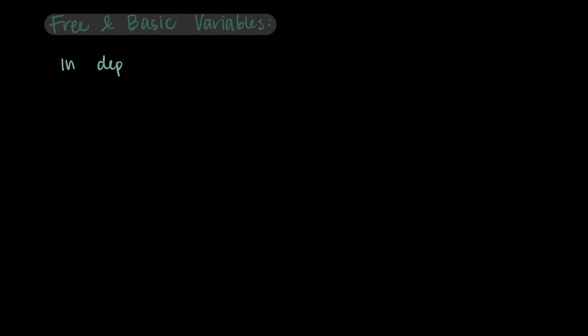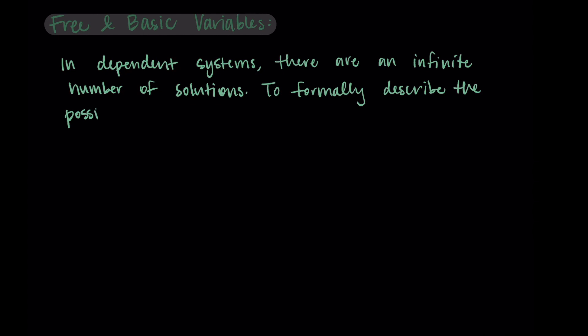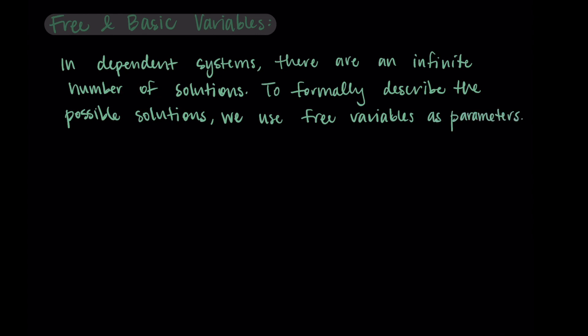In this video we're going to talk about free and basic variables, which are just another way to work with dependent systems. In the past I was a little hand-wavy about how we found solutions to dependent systems, but this language is going to help us be really specific. To formally describe the infinite possible solutions of dependent systems, we're going to use free variables as parameters — variables we can choose freely to write the solution in terms of.